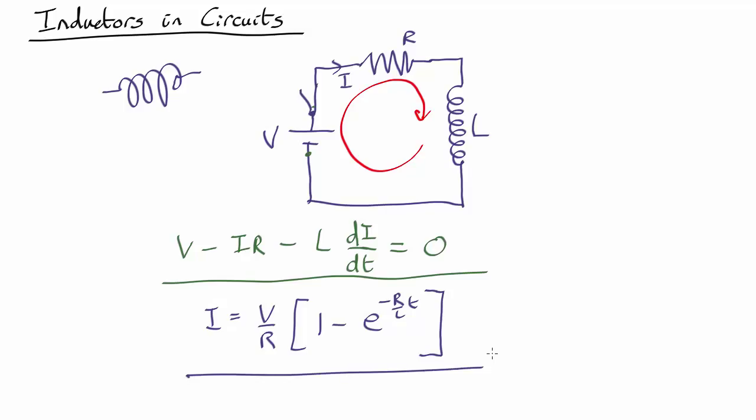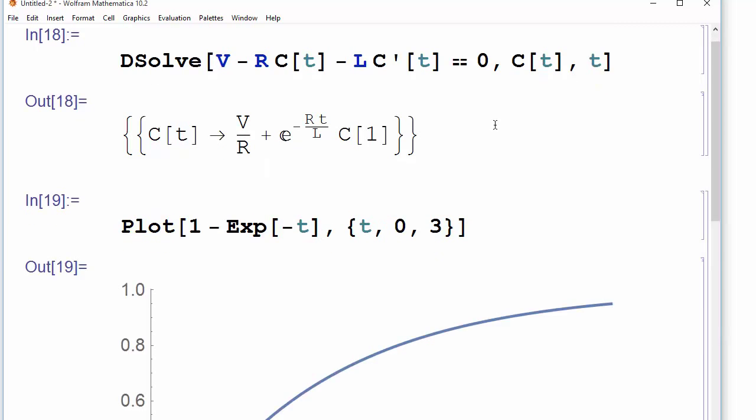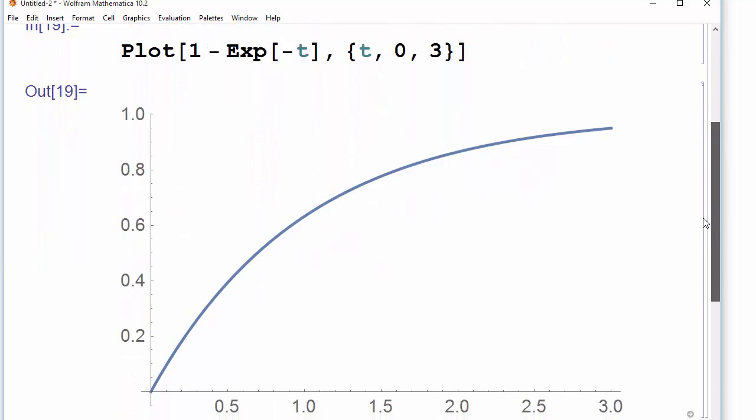What does it look like? Well, we can plot something like that in Mathematica again. So let's plot. I'll call V over R one just for the purposes of this plot. So it's one minus exponential. And we'll call R over L one as well. So minus T. And we'll plot T from 0 to 3, say over that range. And press shift enter to run that.